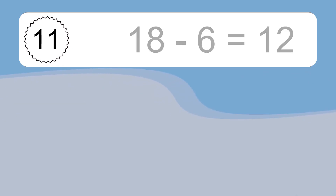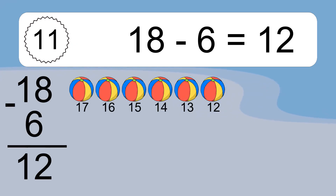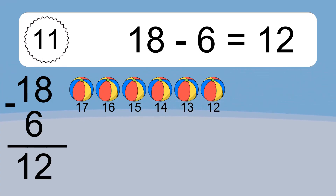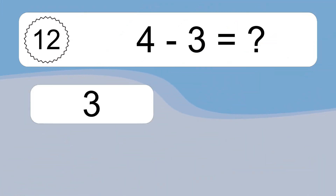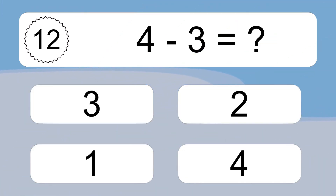18 minus 6 equals what? 18 minus 6 equals 12. Let's count it: 17, 16, 15, 14, 13, 12.